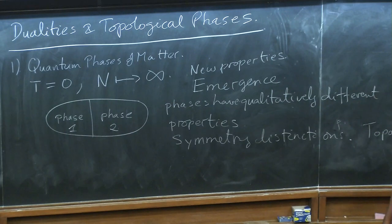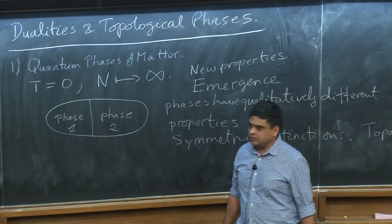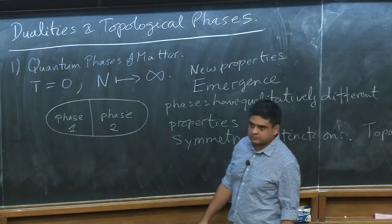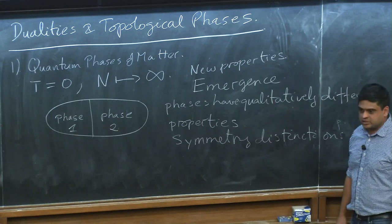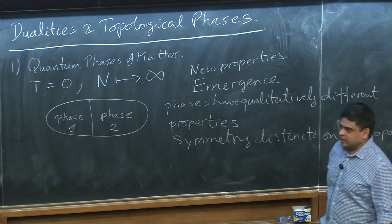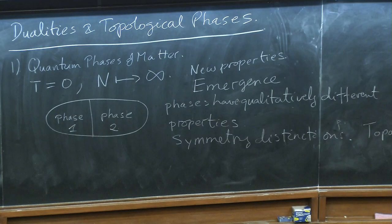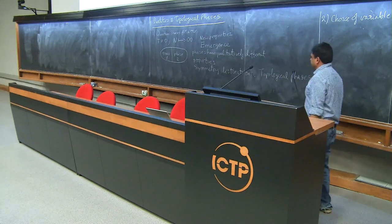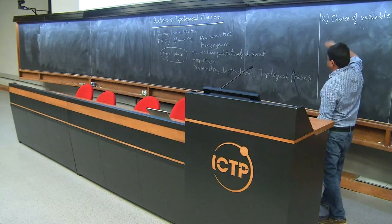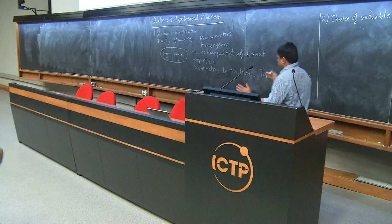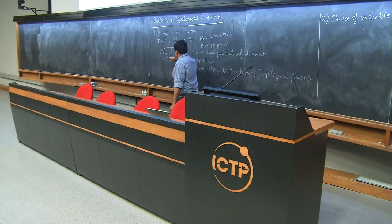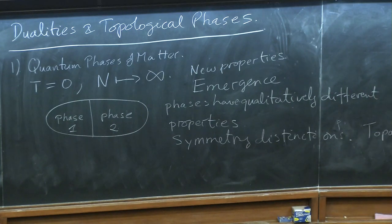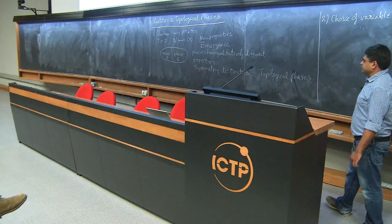We'll see an example today where the fields are essentially free, and then you can solve the problem completely — you can solve it exactly. That's the ideal situation: you find a set of variables that perfectly describes your system and you can really make a lot of progress. A lot of progress in this field, if you want to describe one phase or describe a phase transition between two phases, comes from choosing the correct set of variables — the correct degrees of freedom that efficiently capture these phases.